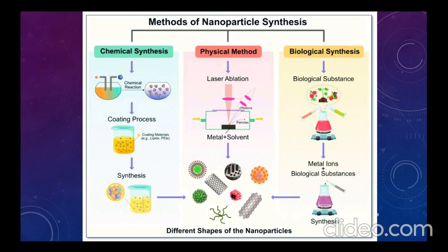In biological synthesis, the culture medium or extract of the organism is mixed with a metal precursor solution. Bioactive compounds in the organism's extract act as reducing and capping agents, facilitating the reduction of metal ions into nanoparticles. This method is nowadays also called green synthesis of nanoparticles.